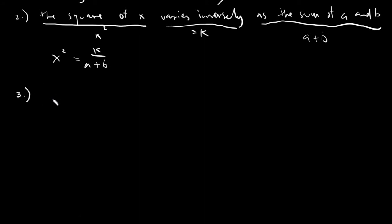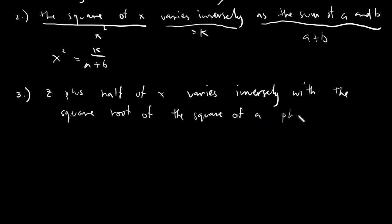Last one, we will have something that is a little bit complicated. Say we have z plus half of x that is inversely with the square root of the square of a plus b. Let's identify the first half of our variation. We have here z plus half of x. This z plus half of x can be expressed as z plus half of x, which is simply one half x, or one half of x.